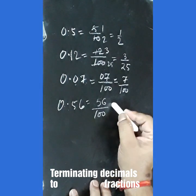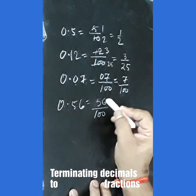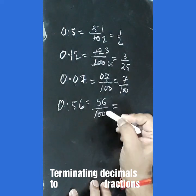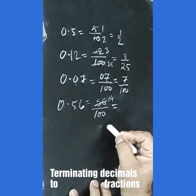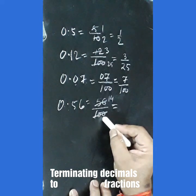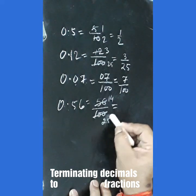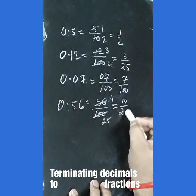0.56 can be written as 56 upon 100. Now we will write it in lowest terms. If we divide both by 4, we get 14 upon 25.